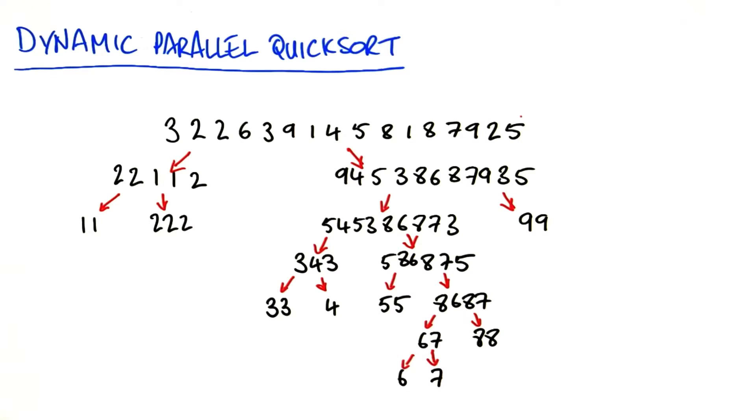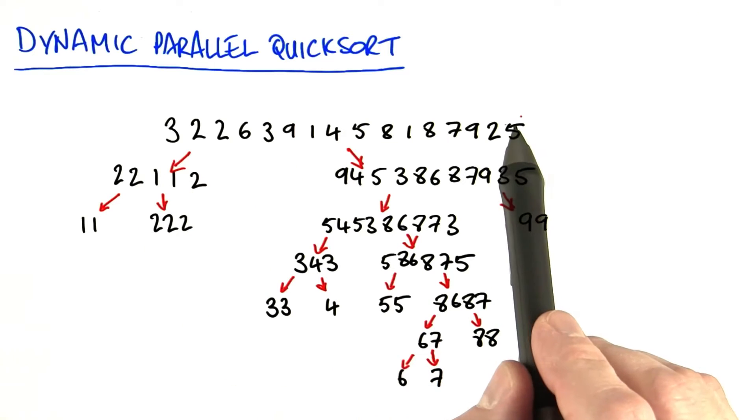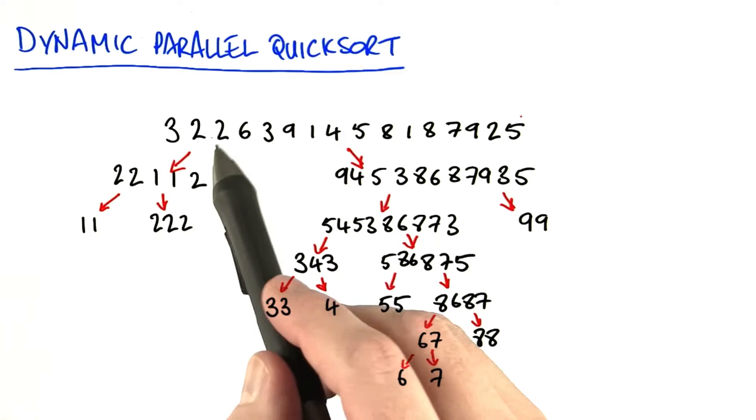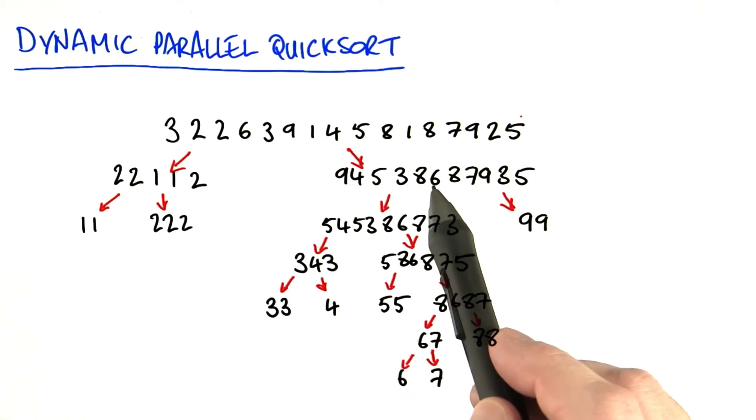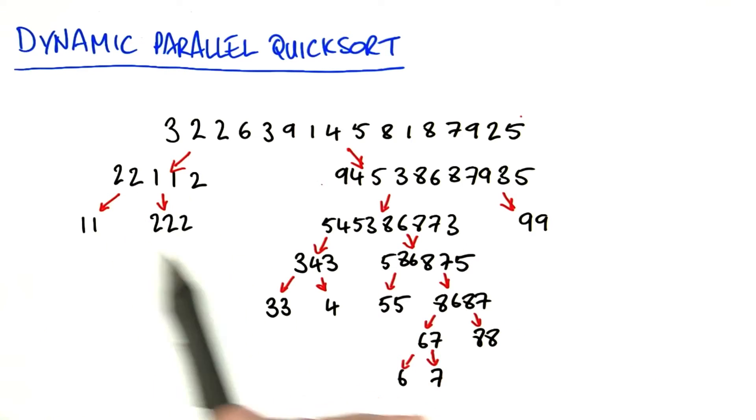What I've got here is an example of how quicksort would sort a series of numbers. At the top level, a single kernel partitions the numbers into two groups, then launches two quicksort kernels, one on each group, and so on down.